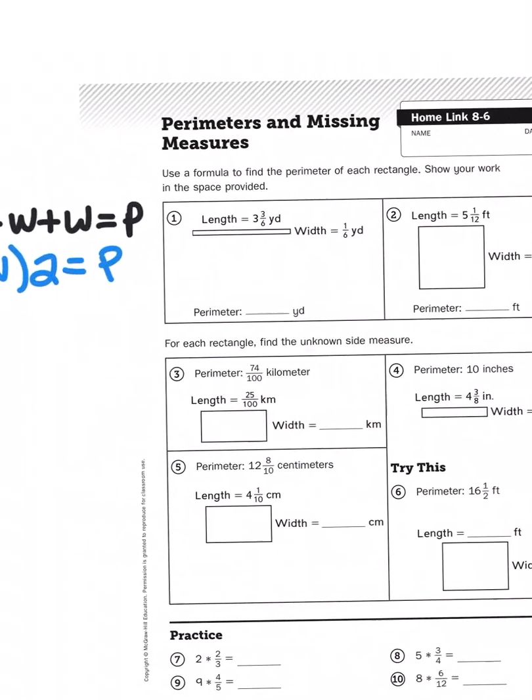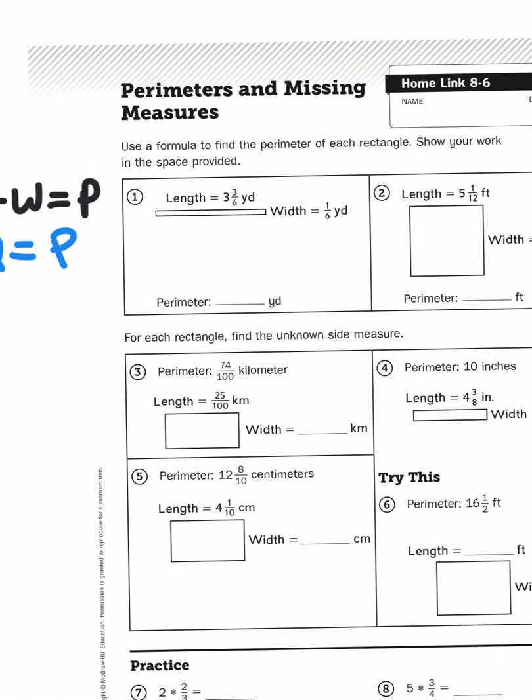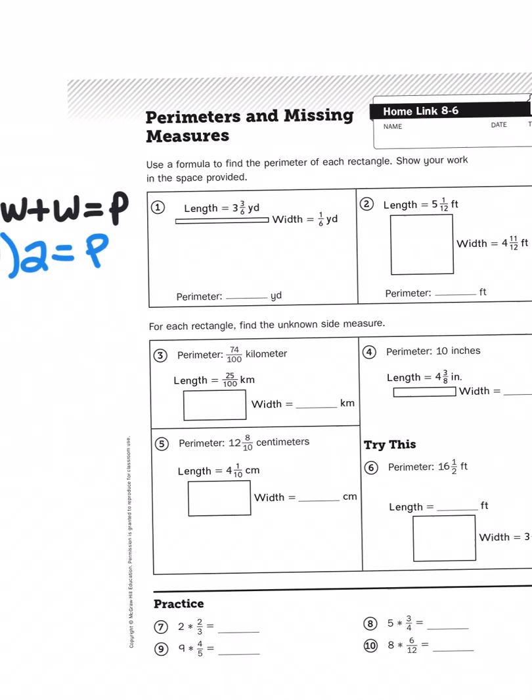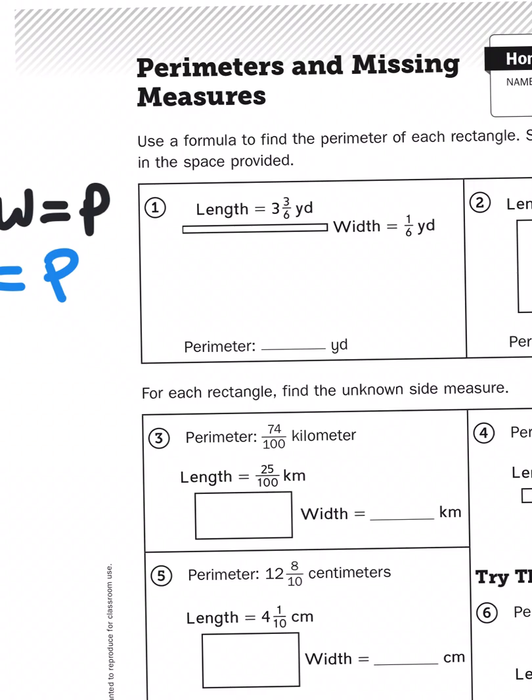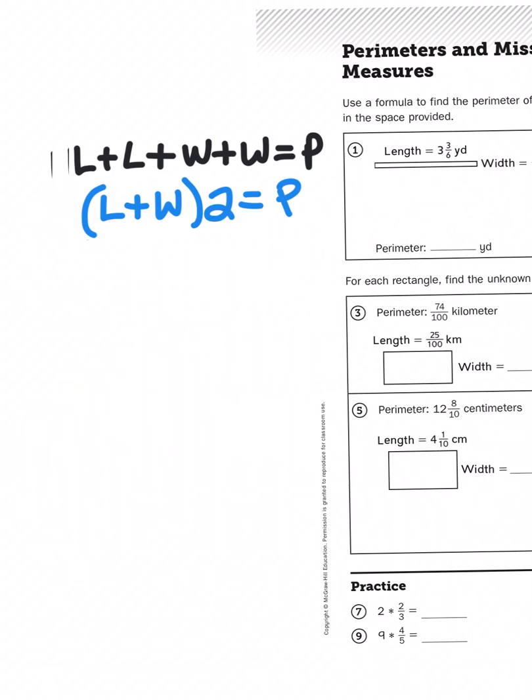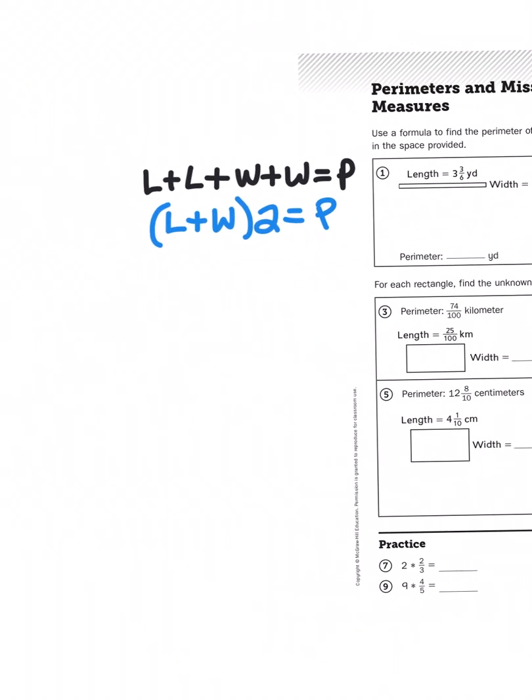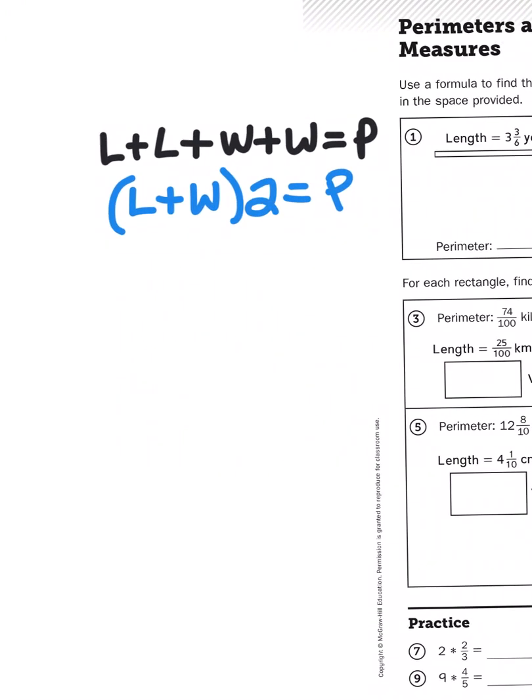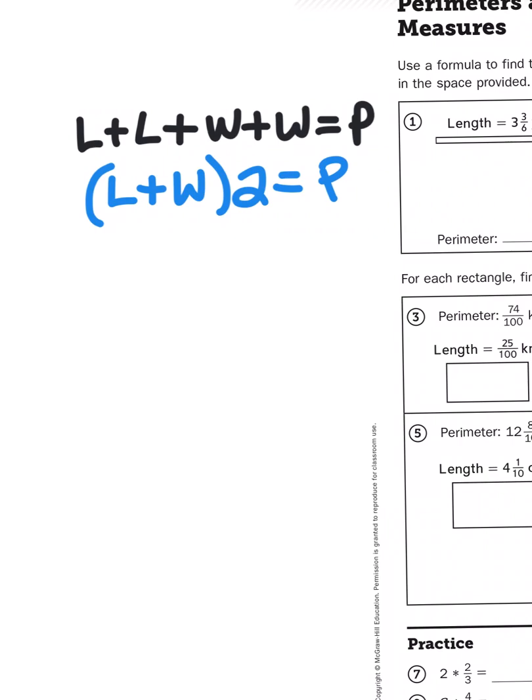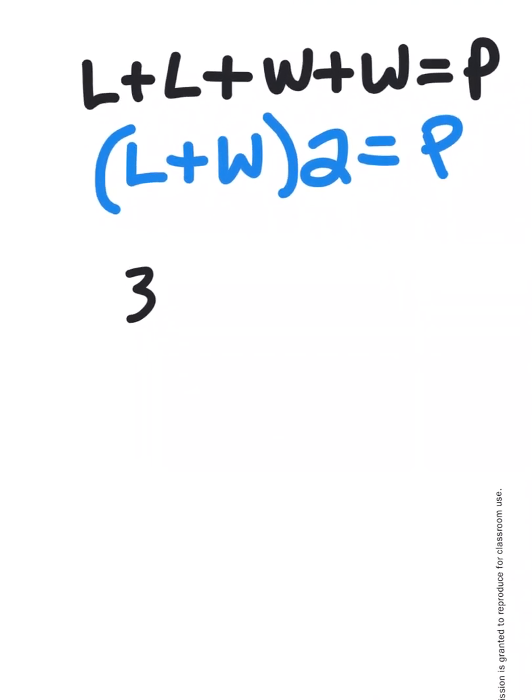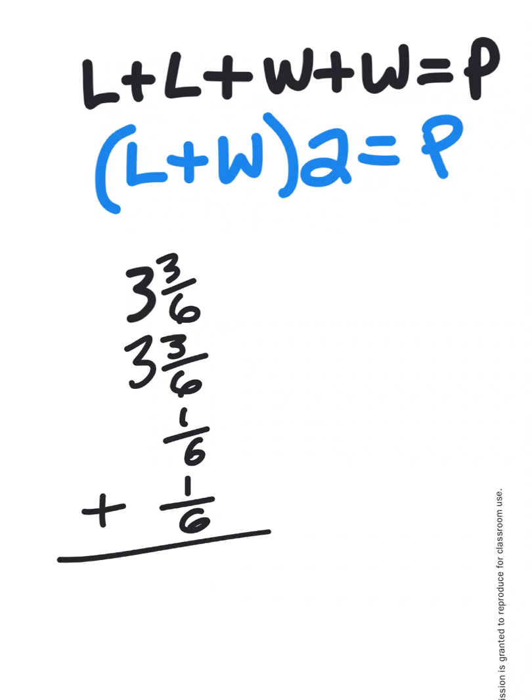So let's take a look at problem number 1. It says the length of this rectangle is 3 and 3 sixths yards. The width is 1 sixth of a yard. We can approach this one of two ways: either add all four numbers together, or add the two numbers together and then multiply by 2. Let's try the first approach. I showed you the formula as a number sentence, but when I actually add these numbers together, I'm going to do it vertically.